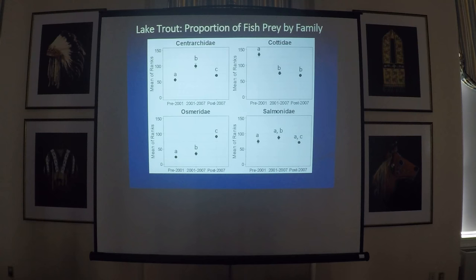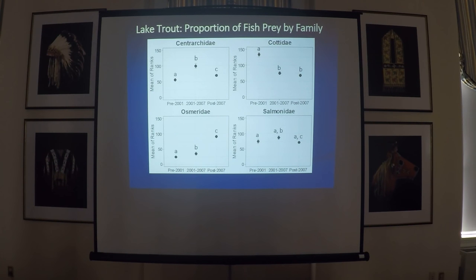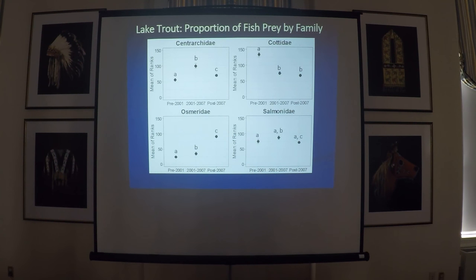Looking at the rank data analysis, we see significant increases in the centrarchid proportion and osmerids (the smelt), and a significant decline in slimy sculpins over time with the removal. Salmonidae varied somewhat, but overall there was no significant difference between pre-removal and post-removal. I should note that data with the same letter are not significantly different.